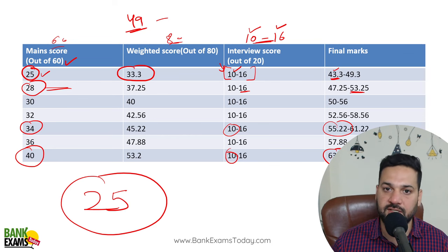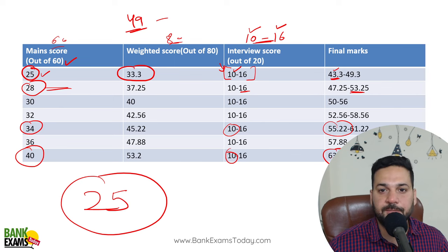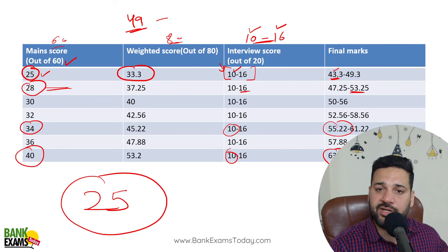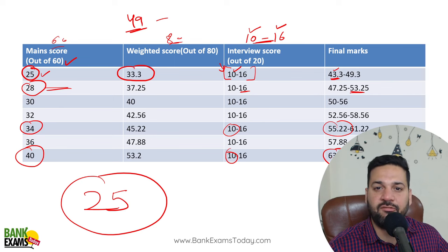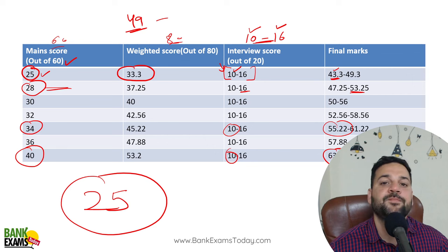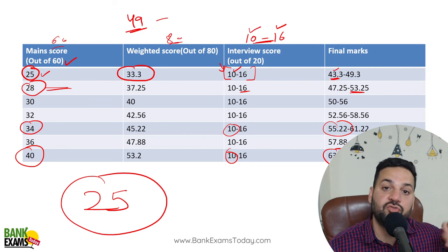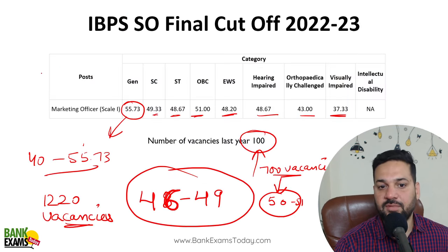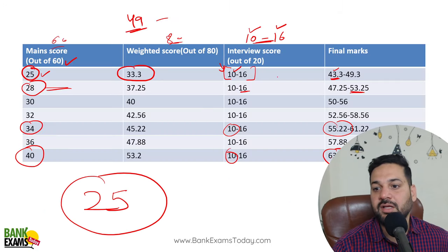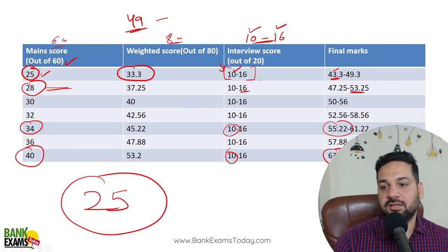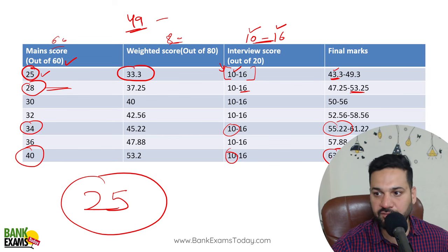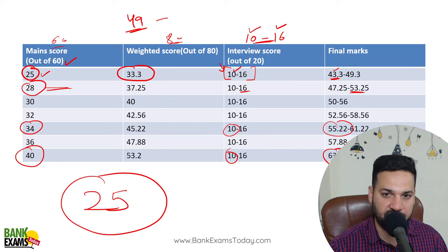Between 28 to 30, I would say there's a 90 to 95% chance. But if you scored between 24 to 27 marks, then you need to have scored really well in the interview. If you scored 25 in the exam and got 15 or 16 marks in the interview, there is a slight chance. Otherwise, if your total is around 42, 43, or 44 marks, things would be very difficult for you.